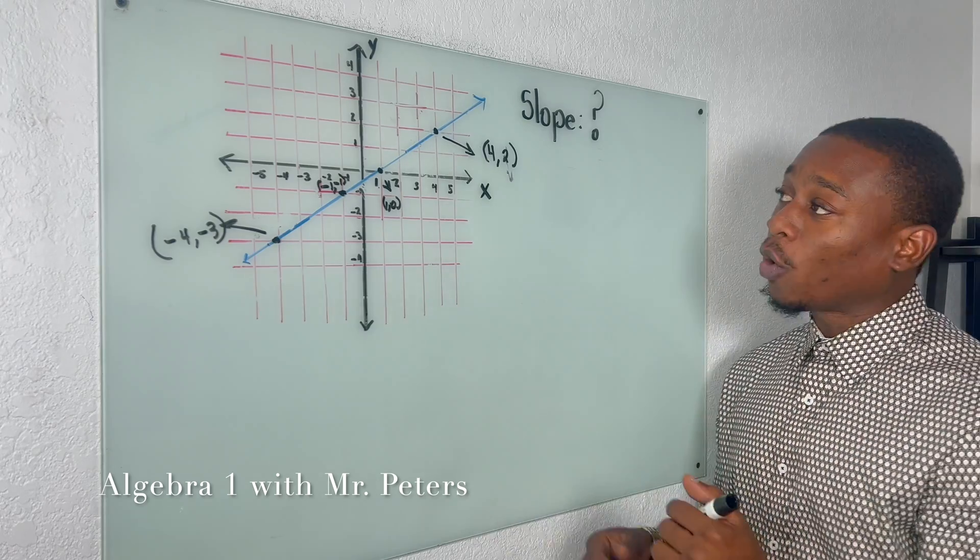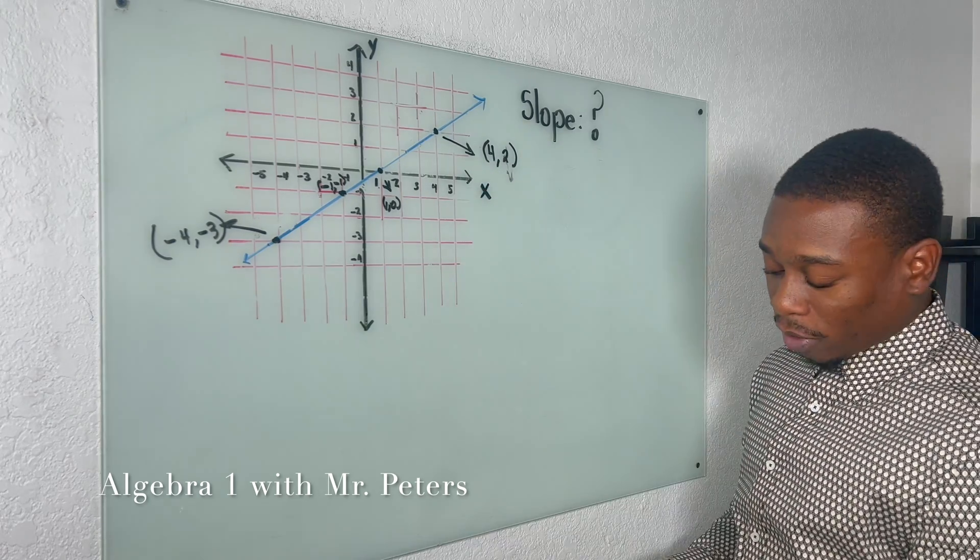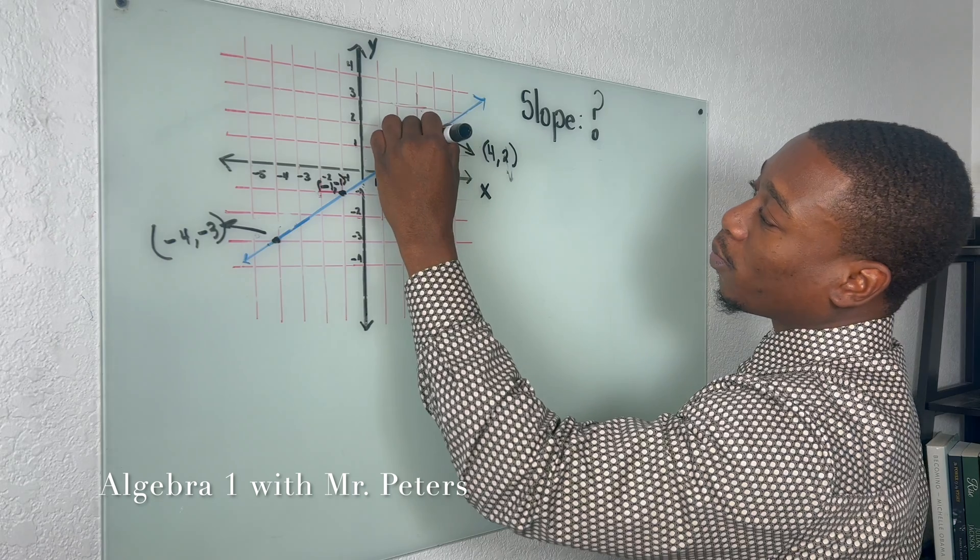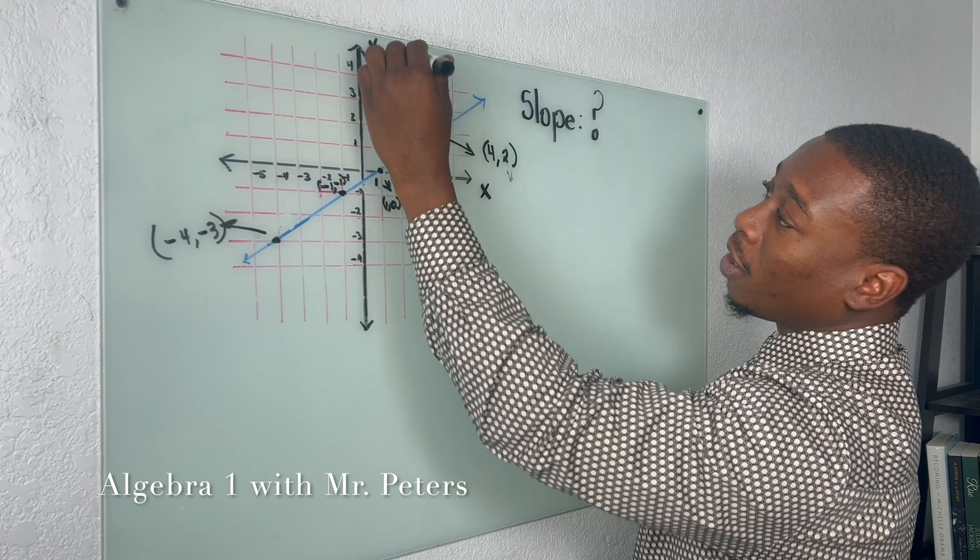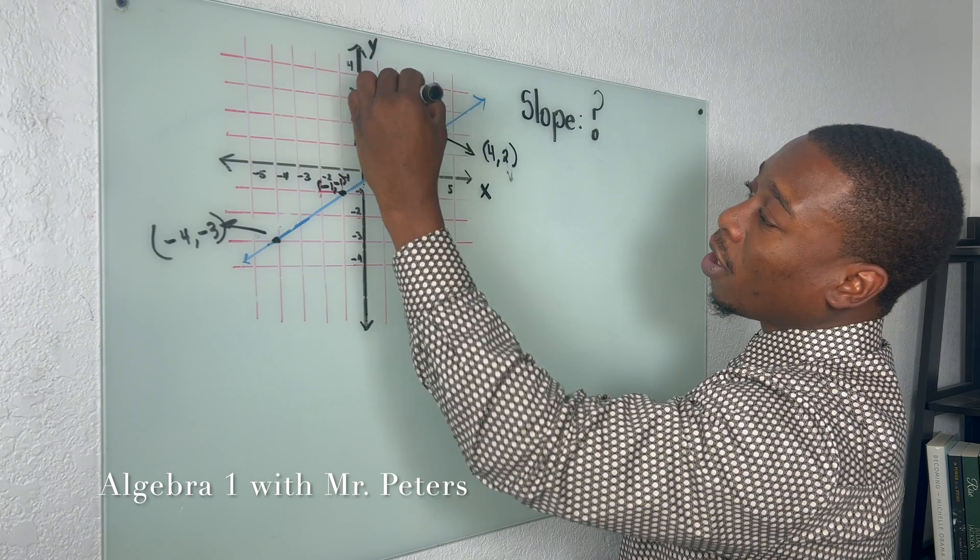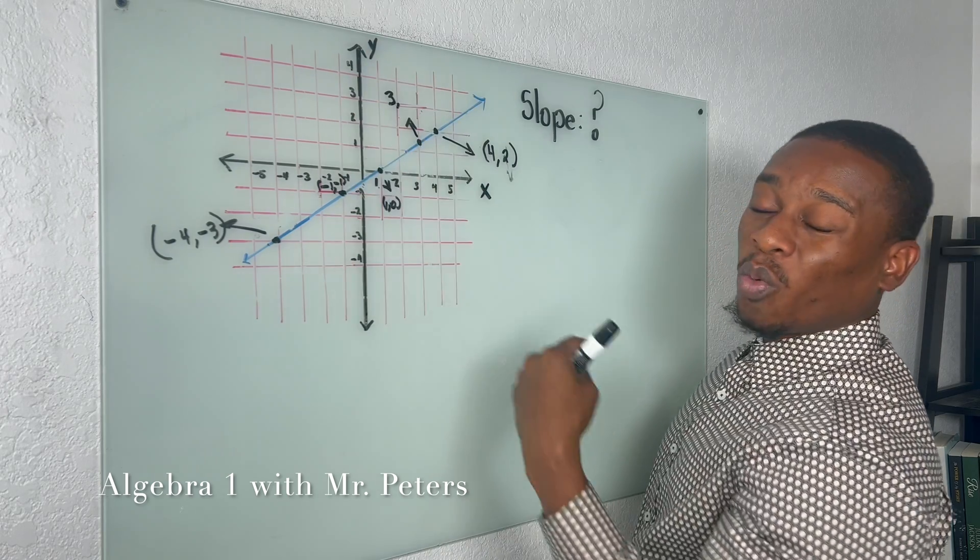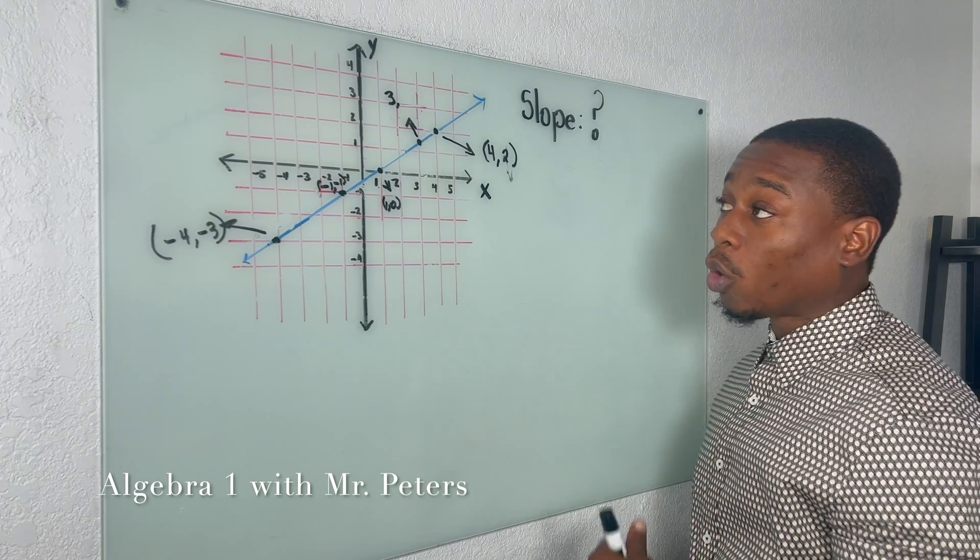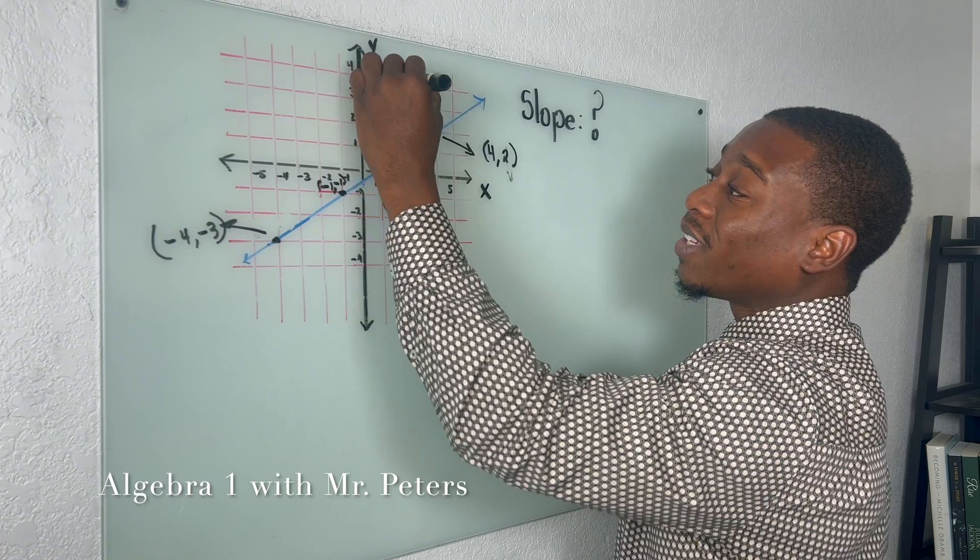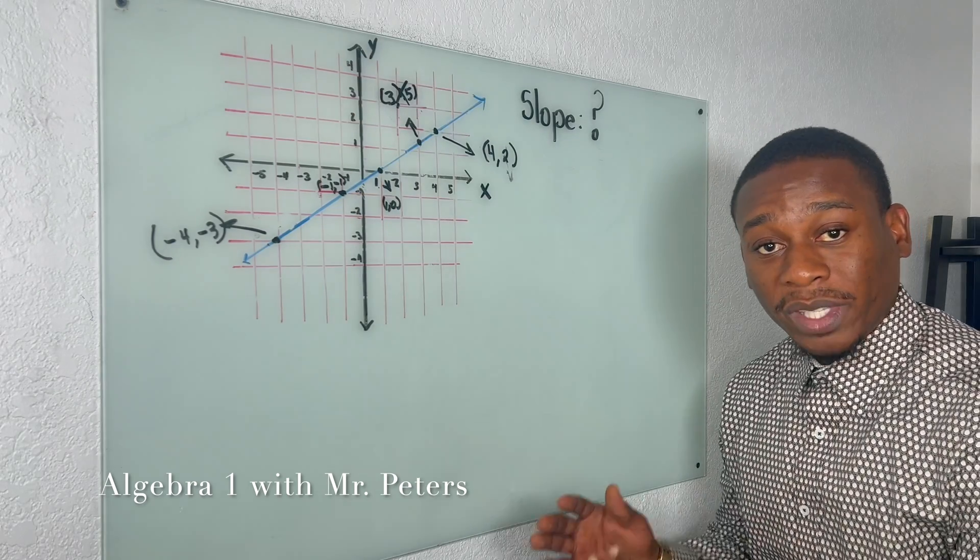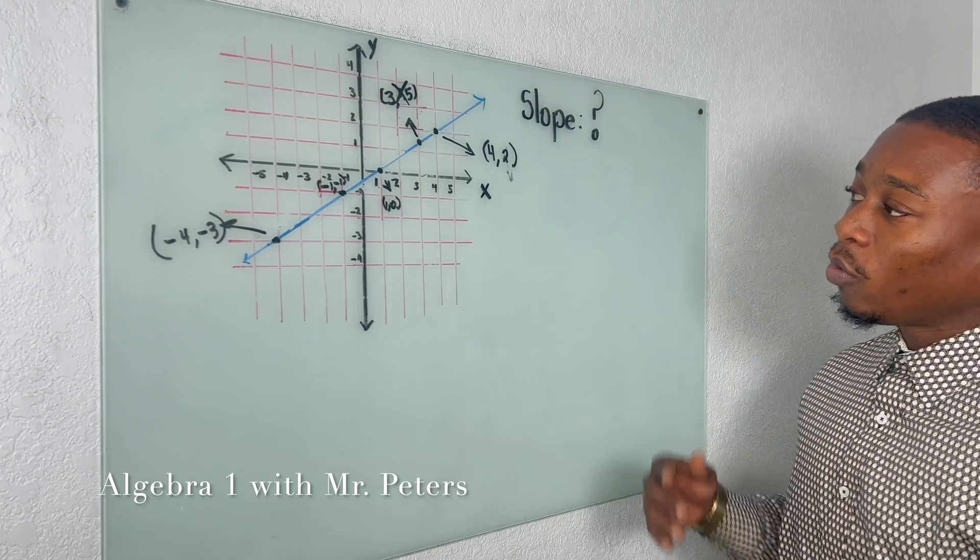The reason we can use these points is because we have an exact X and exact Y. If we look somewhere else, right, let's say we try to use this point right here, what we notice is we do have an exact X, the X is gonna be 3, but when we look at the Y we don't know if it's 1.4, 1.5, we're gonna have to guess, and this is why we do not want to use that point at all.